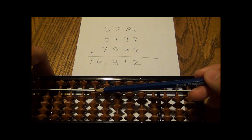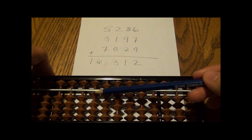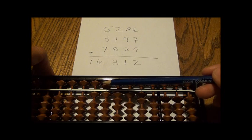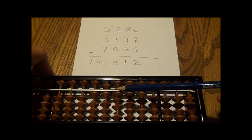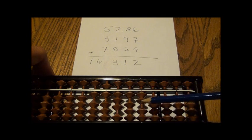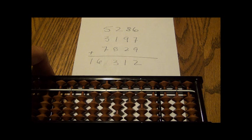Sixteen thousand. This is ten thousand. So one here and six here. Sixteen thousand. Three hundred and twelve. And that's how you add with the Soroban.